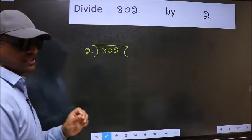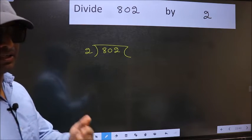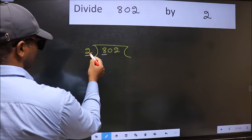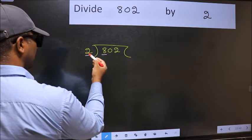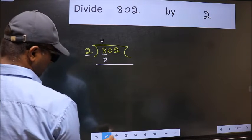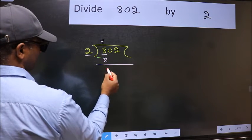This is your step 1. Next, here we have 8 and here 2. When do we get 8 in the 2 table? 2 fours 8. Now we should subtract. We get 0.